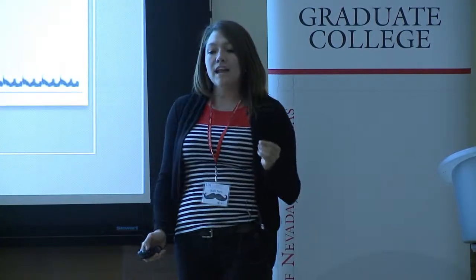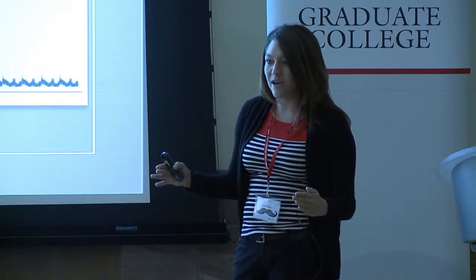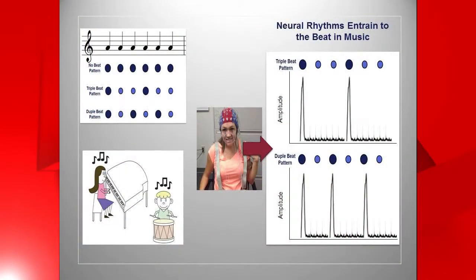An important aspect to musical rhythm is the beat. The beat is where you would likely find yourself clapping along to the music. Let's pretend like I played six tones for you, as represented by these blue dots. You could hear these six tones with one of two different beat patterns — two strong beats or three strong beats in the group of tones.